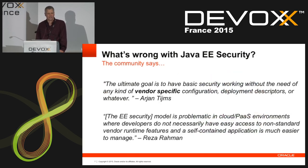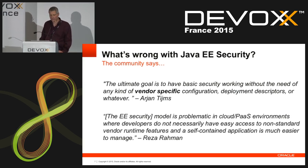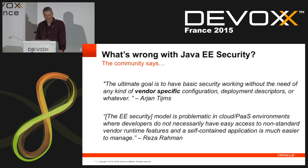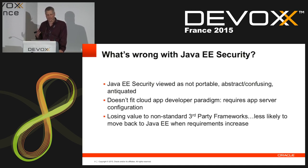When you scan the community and look at different blogs, one of my favorite bloggers, Arjan Time, is quoted as saying: 'The ultimate goal is to have basic security working without the need of any kind of vendor-specific configuration, deployment descriptors, or whatever.' And Reza Rahman is quoted as saying: 'The EE security model is problematic in cloud PaaS environments where developers do not necessarily have easy access to non-standard vendor runtime features and a self-contained application is much easier to manage.' So what's generally wrong with Java EE standard security?